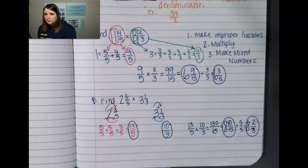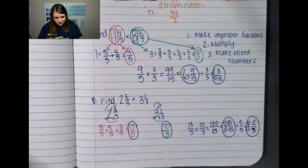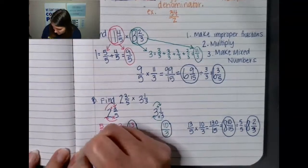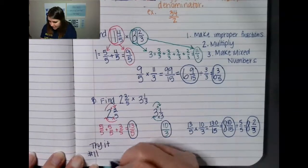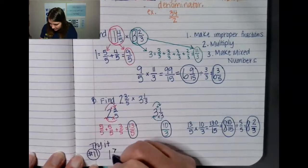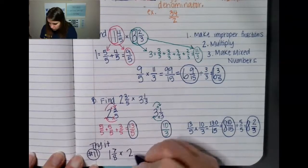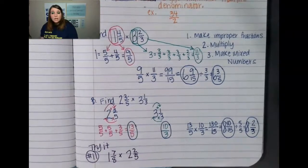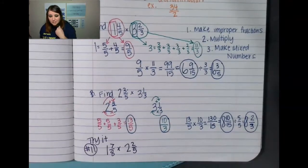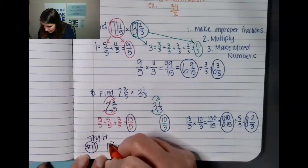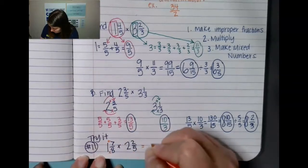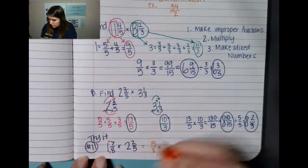That's what happens when you do math too fast while trying to explain it — you have to slow down. Here is your try-it problem. I want you to try this one: it's try-it number eleven in your book. One and seven-eighths times two and two-fifths. Pause your video right now so you can challenge yourself and get the answer on your own without my help.